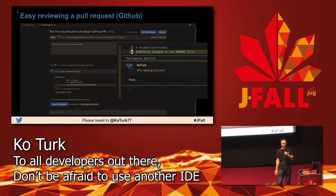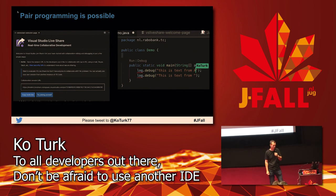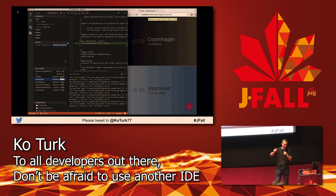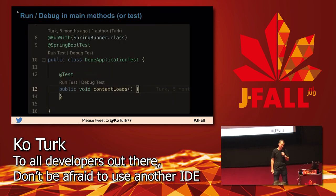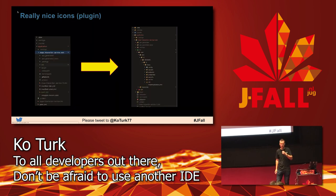GitLens is also a good plugin. What I like is pull request reviewing — normally you go to the GitHub website to check pull requests, but you can do it right in your IDE. Pairing with colleagues is also possible; you can share your workspace, which is especially handy when pairing with juniors. For debugging JavaScript, there's a plugin that lets you set breakpoints without launching Chrome separately.